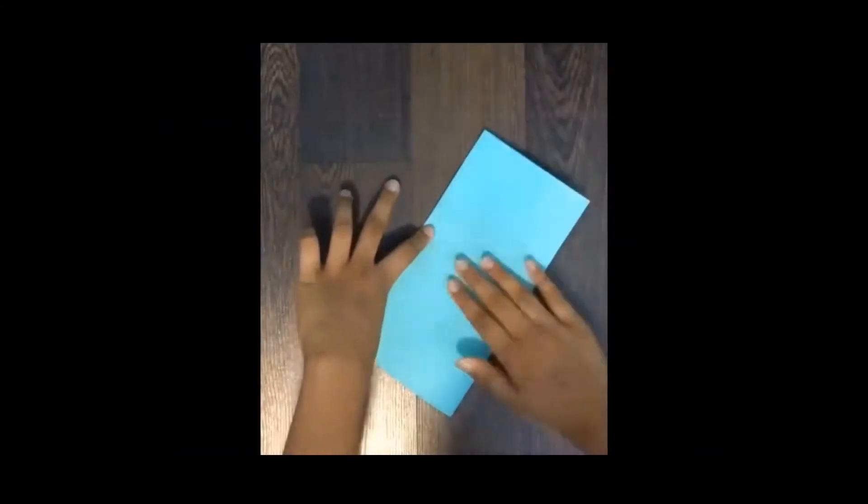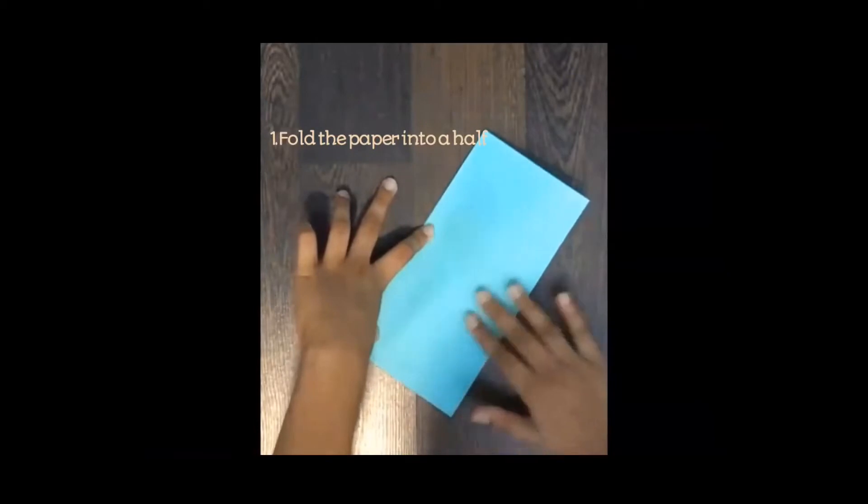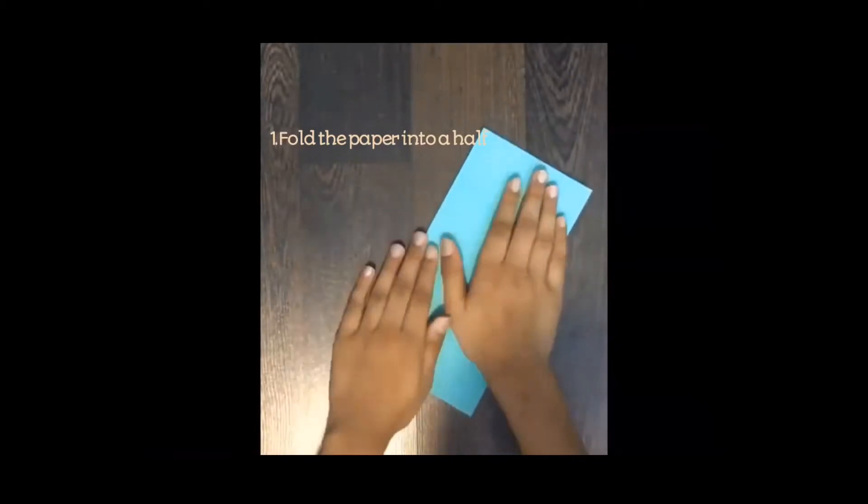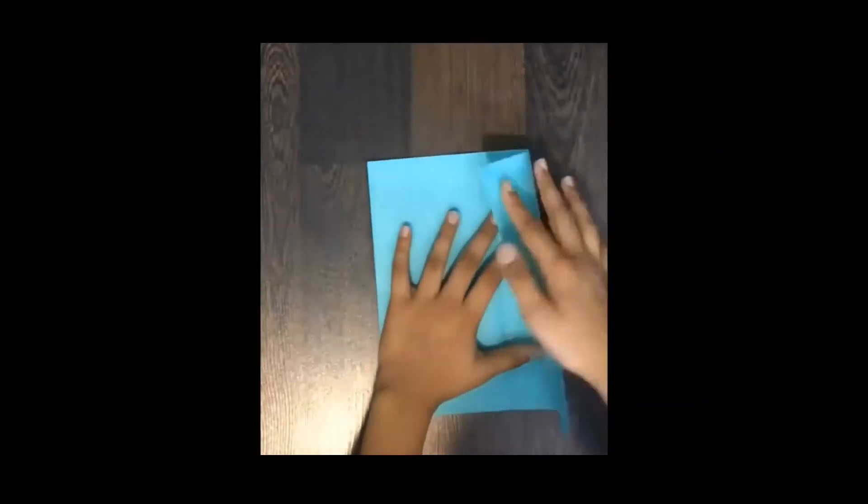First, fold the paper as a rectangle like it's shown here. Do remember you need two A4 sheets for making a ninja star. Then fold the paper again into another half of one side.